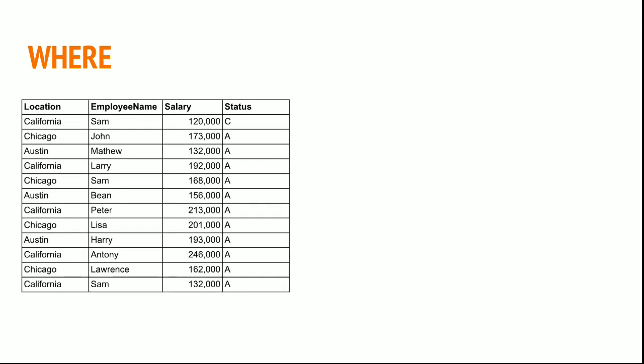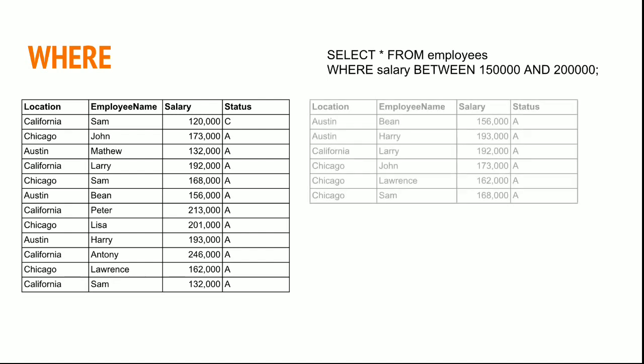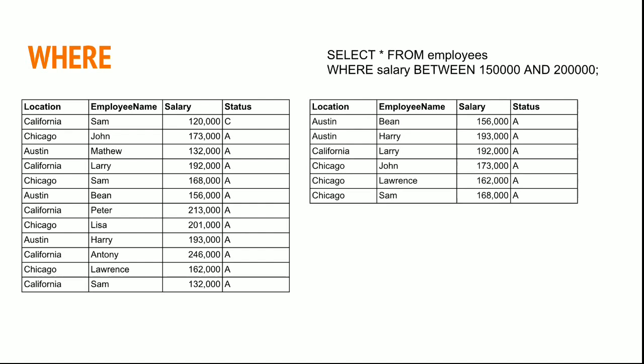In the same table, we know how to fetch employee data by salary and multiple employees. Now if I want to fetch employees whose salary is within a certain range — say between 150,000 and 200,000 — I can write: SELECT * FROM employees WHERE salary BETWEEN 150000 AND 200000. The result will be all employees whose salary falls between those two values.